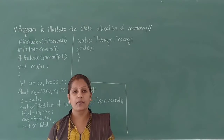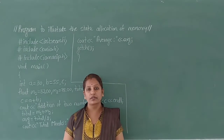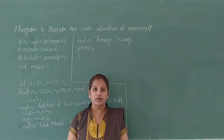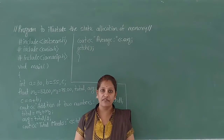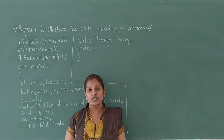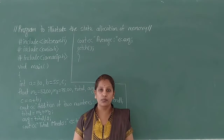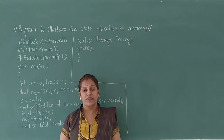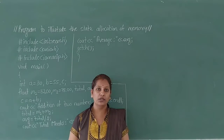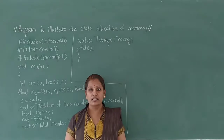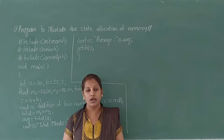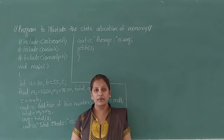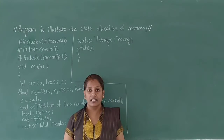Now let's write a program to demonstrate static allocation of memory. First we have to include three header files as preprocessor directives. iostream.h stands for input/output stream header file, to connect input/output devices to the program file while executing the program. Hash include conio.h — consolidated input/output header file — executes the cin and cout statements. And iomanip.h — input/output manipulators header file — to manipulate the manipulators defined and declared in the program.